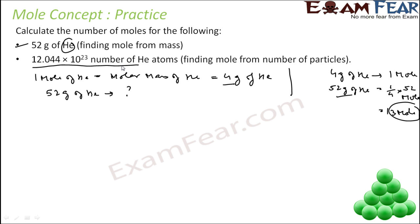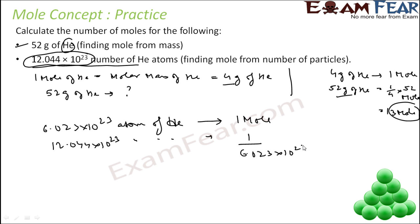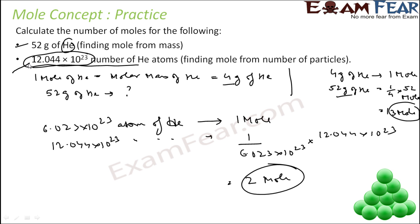The next example gives a certain number of helium atoms and asks us to find the moles. We know that 6.023 into 10 to the power 23 atoms of any substance is equal to 1 mole. So that many numbers equals 1 divided by the old value, multiplied by the new value. Solving this, you get 2 moles — those many particles is nothing but 2 moles of helium.